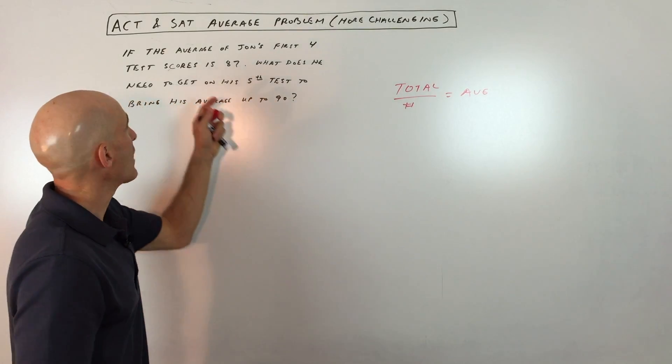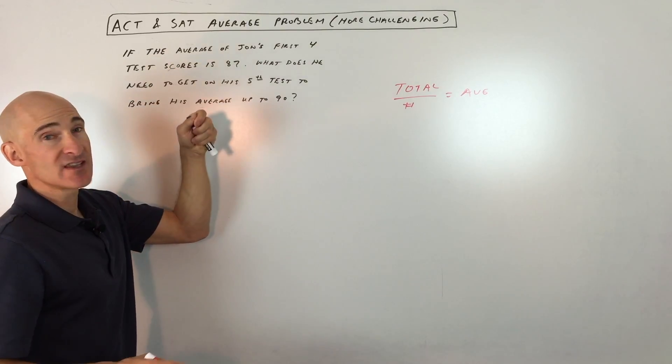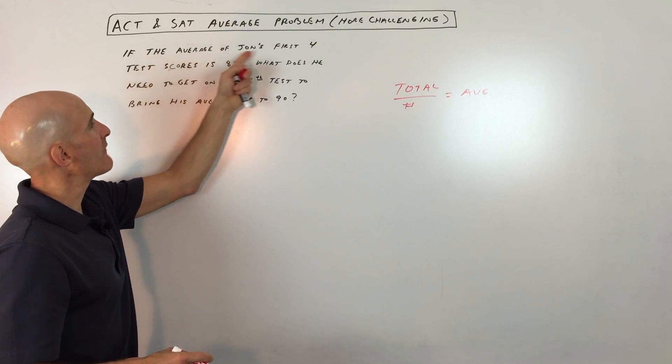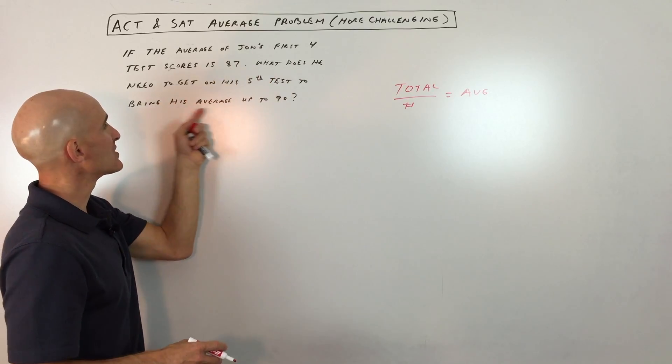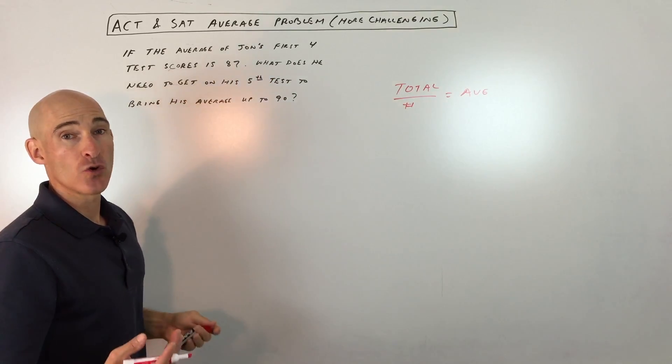It says if the average of John's first four test scores is 87, what does he need to get on his fifth test to bring his average up to 90? What we're going to do is work this in a couple steps. First, we don't know what John's total is.